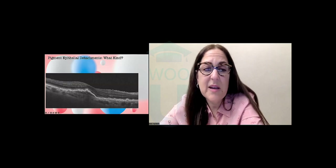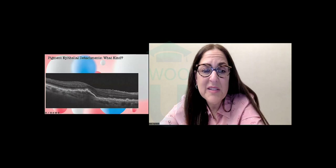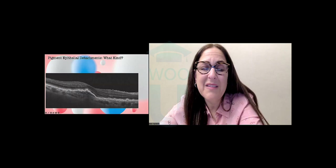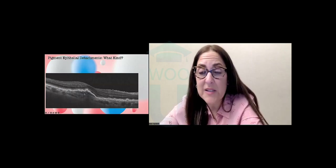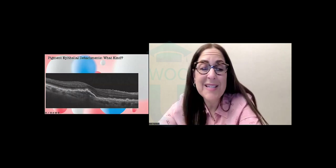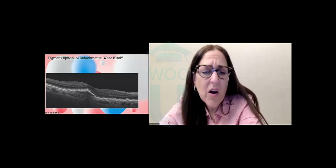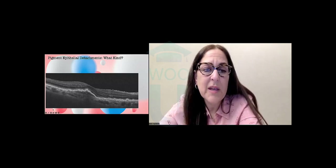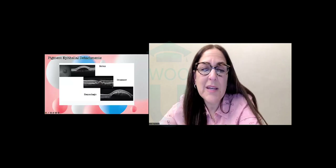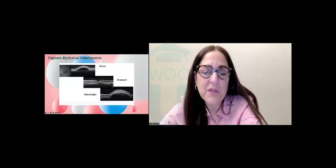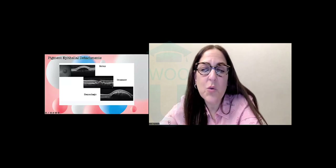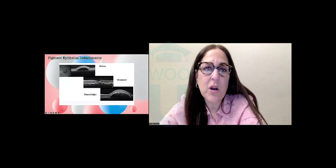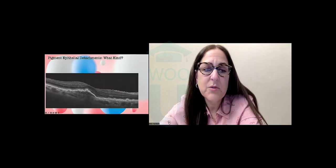Here's an example — if you follow your RPE over, you'll notice the RPE lifts up and you can appreciate differences in reflectivity beneath the RPE. So this would be a fibrovascular or hemorrhagic PED. Also because of the corrugations in the RPE: when you have a drusenoid PED, they're very well delineated and distinct. When you have a fibrovascular or hemorrhagic one, you can see corrugations in the contour of the RPE.